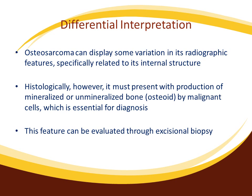While osteosarcoma can display variation in its radiographic features, specifically related to its internal structure, histologically it must present with production of mineralized or unmineralized bone — which is osteoid — by malignant cells. This is essential for diagnosis and can be evaluated through excisional biopsy.